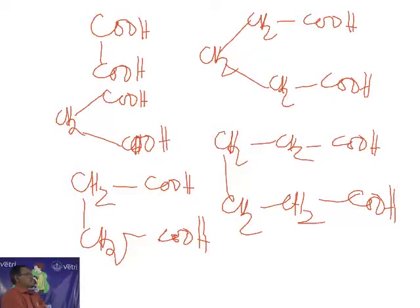So normally one person will be asked, what happens when dicarboxylic acid is heated? There is a rule called Blanc's rule. What is Blanc's rule? Blanc's rule says, when a dicarboxylic acid is heated, 1,4 and 1,5 will give cyclic anhydride. And 1,6 and 1,7 will give cyclic ketone. This is Blanc's rule.